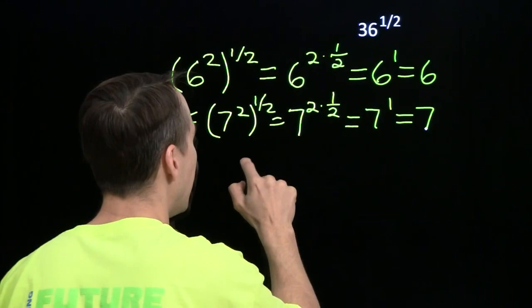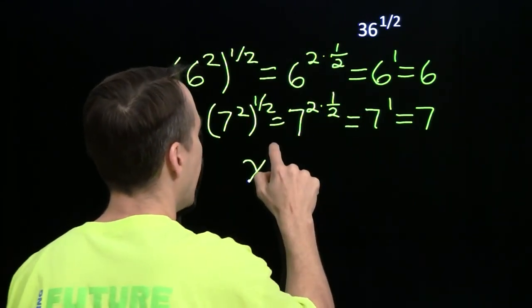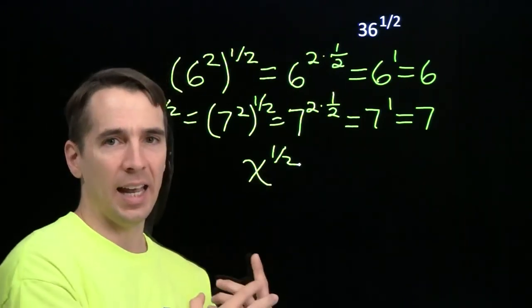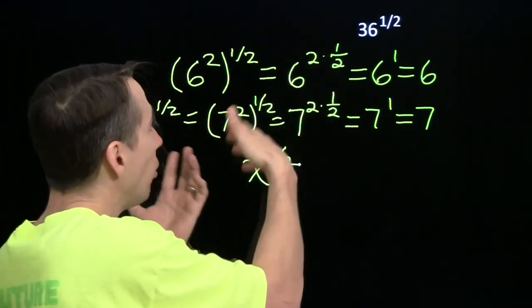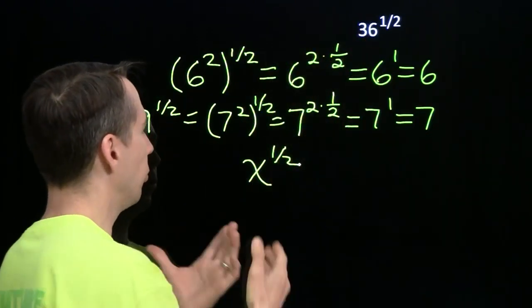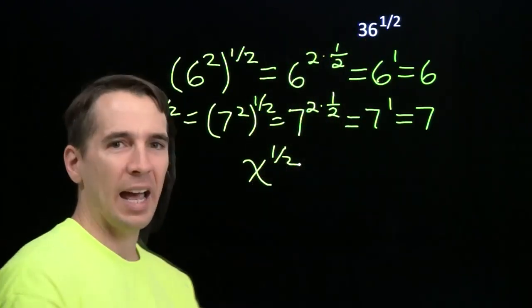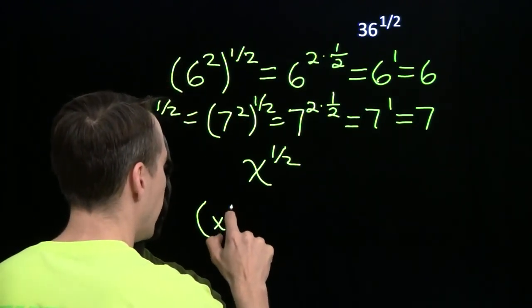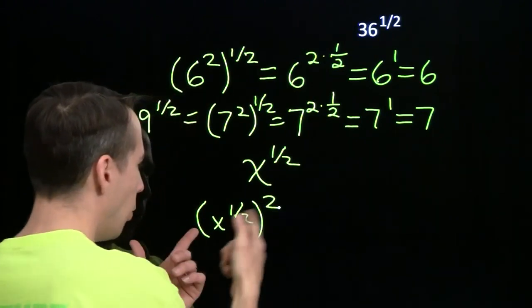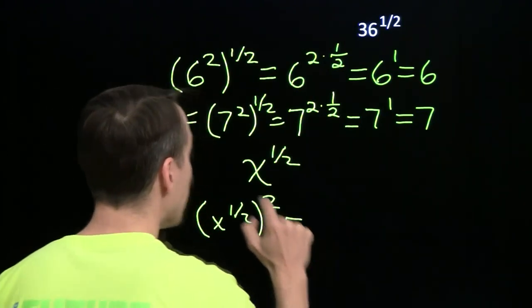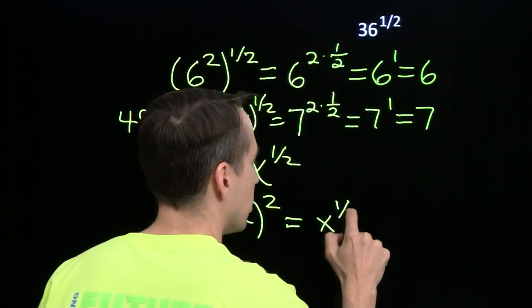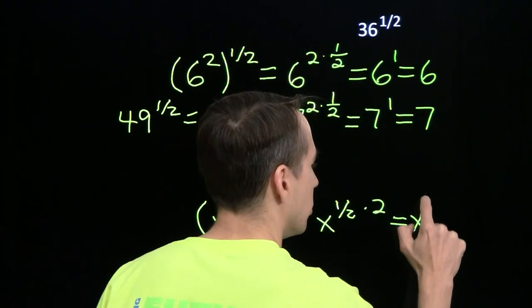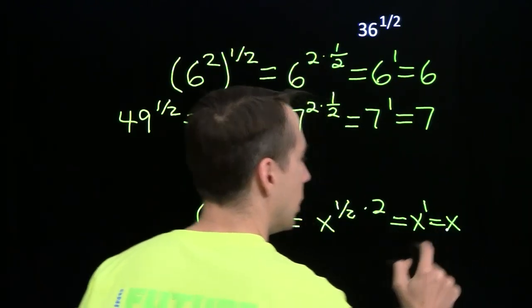That gives us an idea. We can define x to the 1 half as the number we squared to get x. And then it'll all just work very nicely with our exponent rules. If we define x to the 1 half that way, let's see if it actually works. When we square that out, we use this exponent rule. We get x to the 1 half times 2. And sure enough, 2 times 1 half is 1 is x.